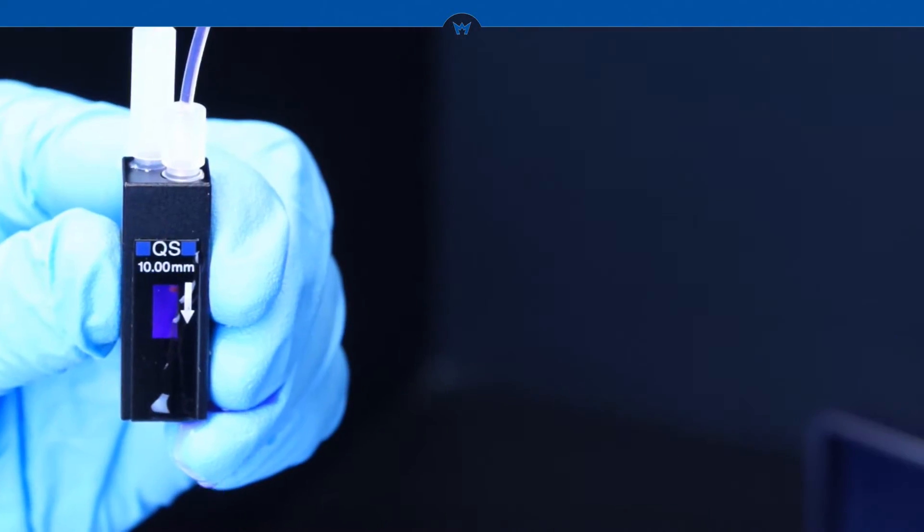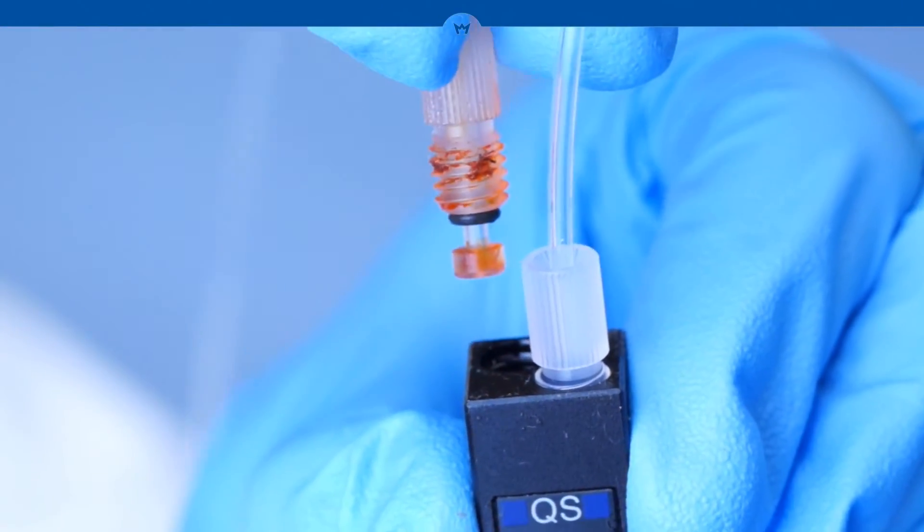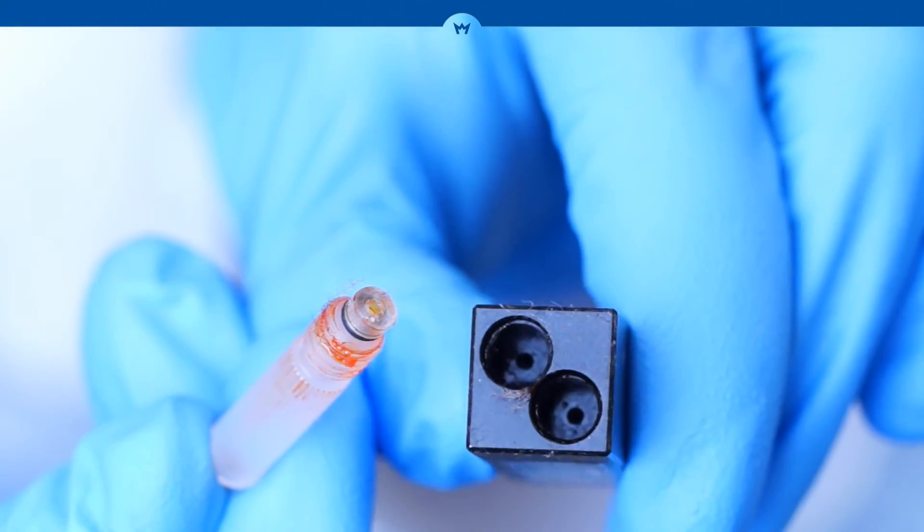If the tubes do not seal tightly, it is usually due to the following three reasons. First, there are dirt particles between upper surface of the cell and the flange. Clean cell and tube according to the handling instructions or blow air through the cell's bore.